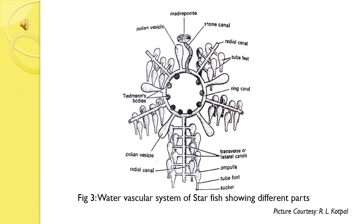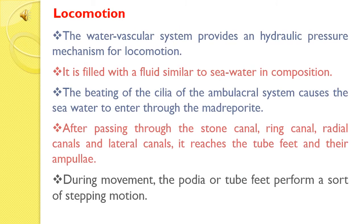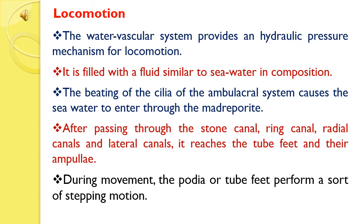This is the picture of the water vascular system of starfish showing different parts. Locomotion: The water vascular system provides a hydraulic pressure mechanism for locomotion in starfish. It is filled with a fluid similar to sea water in composition. The beating of the cilia of the ambulacral system causes sea water to enter through the madreporite. After passing through the stone canal, ring canal, radial canal and lateral canal, it reaches the tube feet and their ampullae.